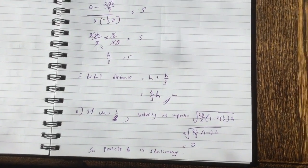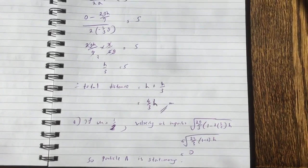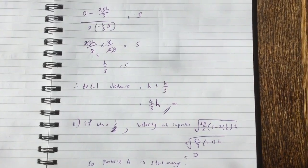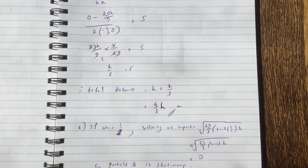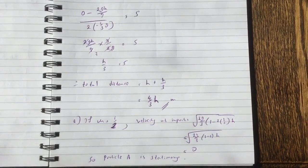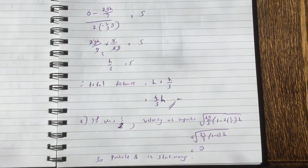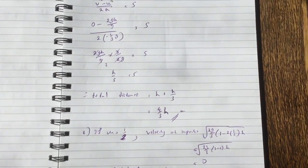So if mu is equal to half, the velocity at impact becomes 0. Because when you put half into the equation of the velocity, you get 1 minus 2 bracket half in the middle there in the bracket. So that makes it 0. So the particle A is stationary if mu is half. Thank you.